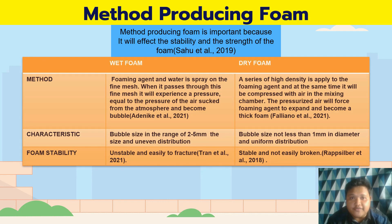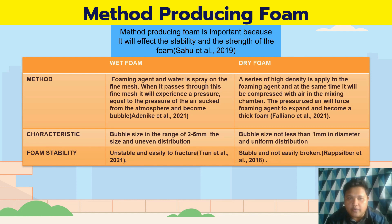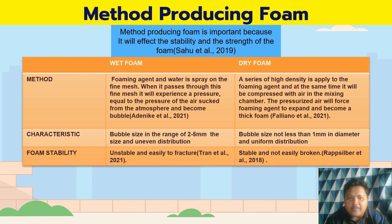Now we look at methods of producing foam. The method of producing foam is very important because it affects the stability and strength of the foam. Comparing wet foam and dry foam: the wet foam method produces bubbles with uneven size distribution and the bubbles are not stable and easy to fracture, while the dry foam method produces a uniform distribution of bubbles that are stable and not easily broken.